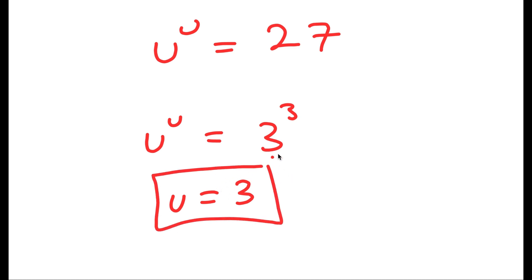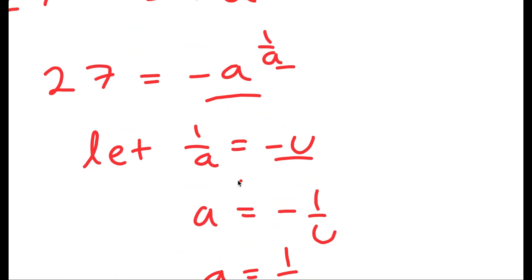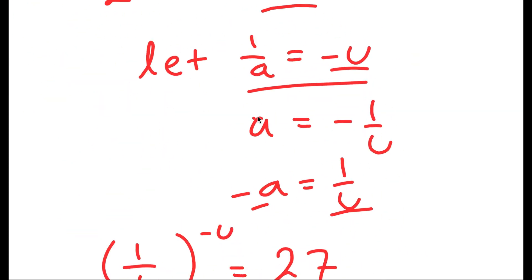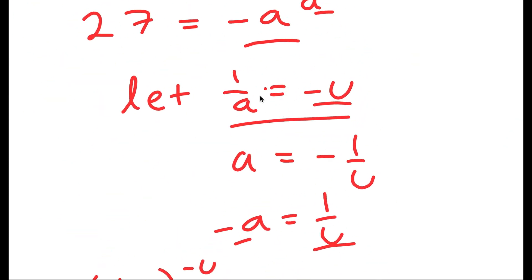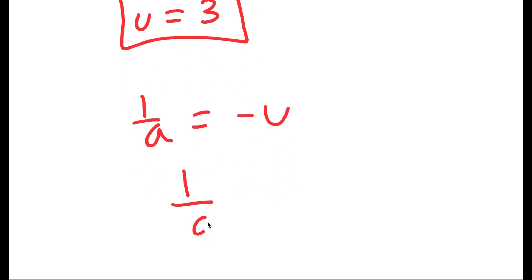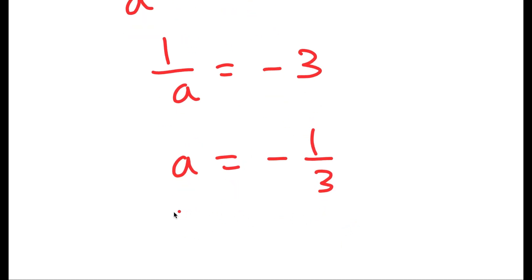But remember, u is not what we're solving for — we're solving for x. So we have to first solve for a, then using a we'll get x. We have 1 over a is equal to negative u, meaning 1 over a is equal to negative 3, because u is equal to 3. So a is equal to negative 1 over 3. Now I have my value of a.